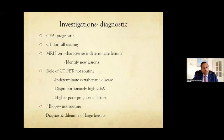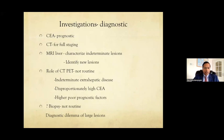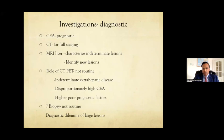CT PET is controversial — many centers do it routinely, but we don't do it routinely. Our indications include indeterminate extra-hepatic disease, like omental thickening or unclear nodules in the left upper quadrant. Also disproportionately high CEA — if you have a CEA of 3,000–4,000 with just one liver met, it's worth doing. Third indication is three or more Fong score risk factors, where you're likely missing something else.